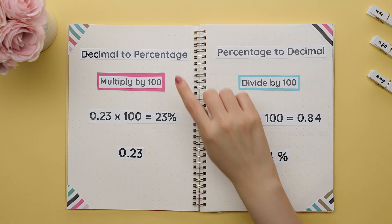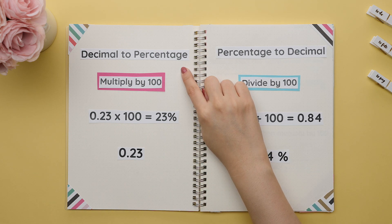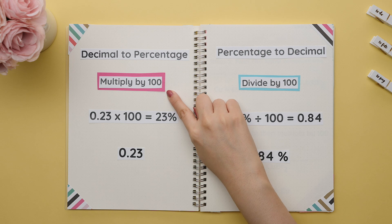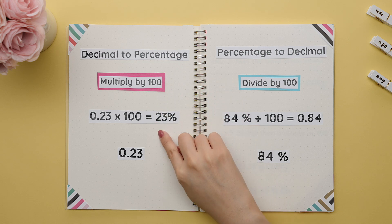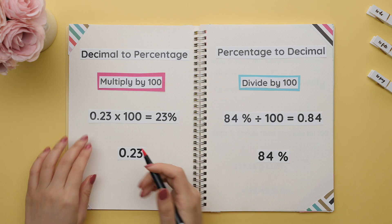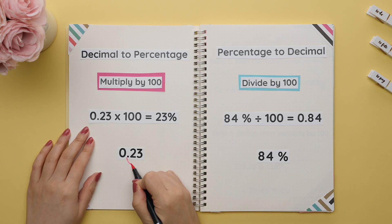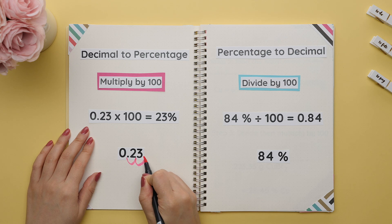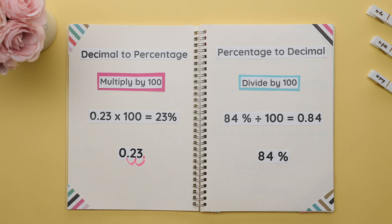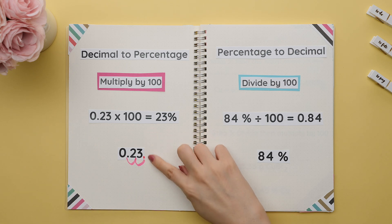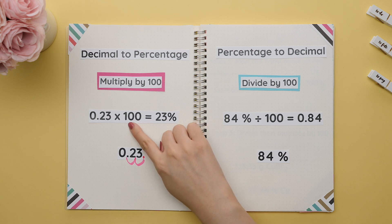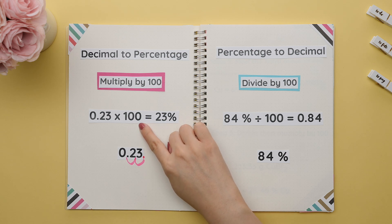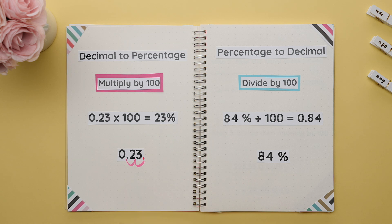To change a decimal into a percentage, you multiply by 100. Instead of using a calculator, we can just move the decimal to the right two times. When multiplying by 100 you move the decimal to the right, and since there are two zeros in 100, this is why we move the decimal two times.